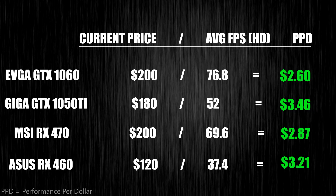Taking a look at the performance per dollar, we can see that the GTX 1050 Ti is actually not the best value out of the four. In fact, the GTX 1060 3GB variant gives you more bang for your buck.